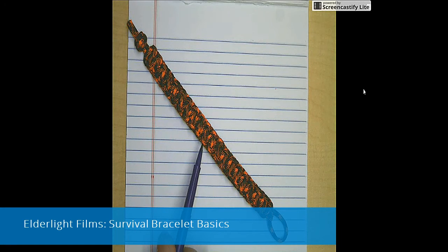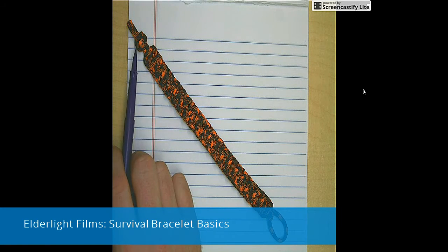We're creating a survival bracelet today. We're going to start with a diamond knot, measure our wrists, create a loop, and then fill in the gaps with a cobra stitch, kind of a basic for survival bracelets.